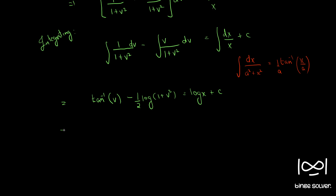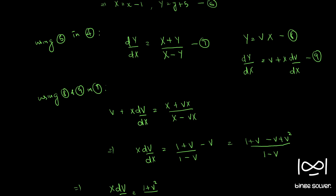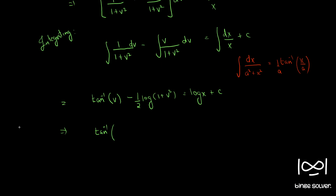Substituting v equal to Y/X and multiplying throughout by 2, we get 2 tan⁻¹(Y/X) minus log(1 plus Y²/X²) plus log X squared equal to c. Combining the log terms using log(ab), we get 2 tan⁻¹(Y/X) plus log(X squared plus Y squared) equal to c, where we write the constant as log c₁.